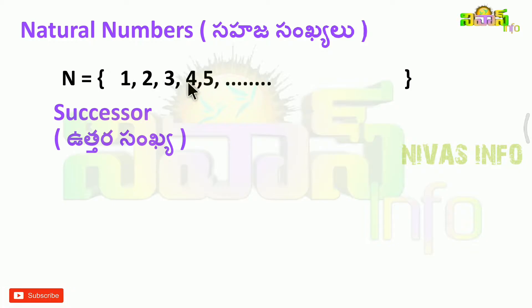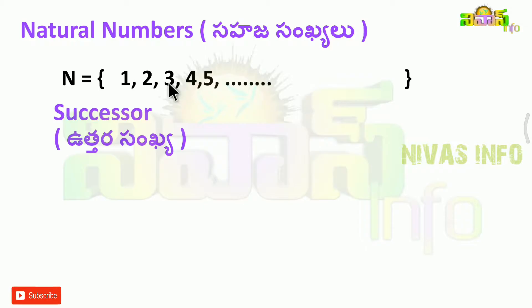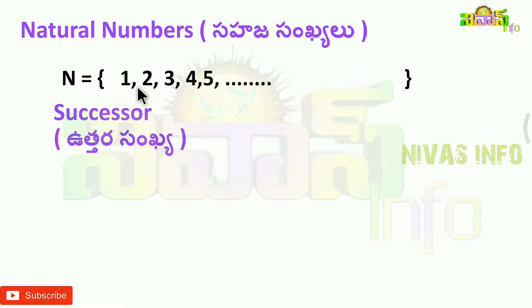3 to 4 is a successor. If you subtract 1 from 4, it becomes 3. If you subtract 1 from 3, it becomes 2. If you subtract 1 from 2, it becomes 1.